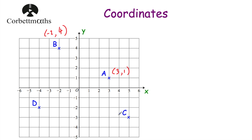Next, the coordinates of point C. Point C is 5 along the corridor, so we open our brackets and put 5, then our comma. And then we're going down 1, 2, 3, so it's negative 3. The coordinates of point C would be (5, -3), because we're going 5 along the corridor and 3 down the stairs.